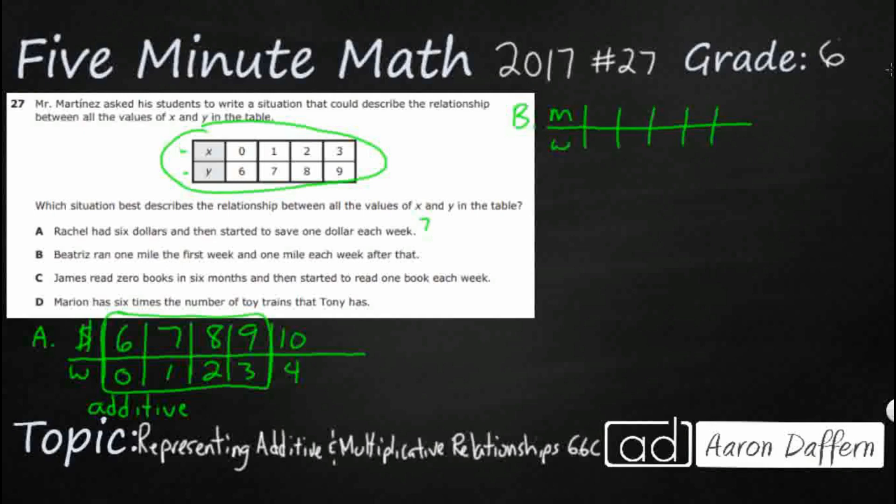And so we know that the first week, we're going to start with the first week, and we're just going to add one week each, and she ran one mile the first week, and then one mile each week after that. So if she ran one mile the first week, and then the next week, she ran another mile, so we're going to add one, add one.